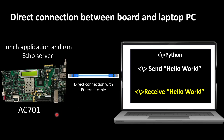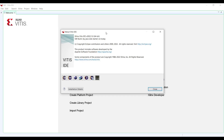In this example, the evaluation board AC701 is directly connected to my laptop PC by an Ethernet cable. We launch the echo server application and run it on the AC701, and we run Python on the PC as the client. Now let's go to the Vitis IDE and start our application design.